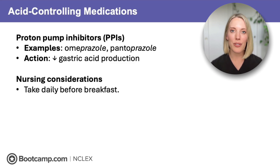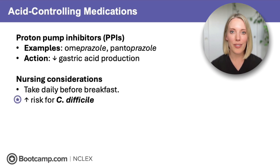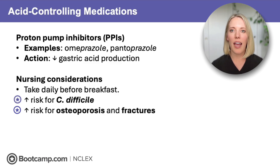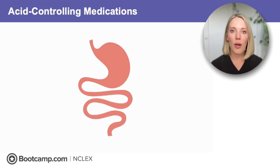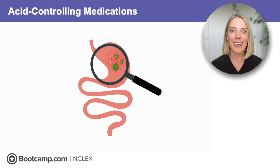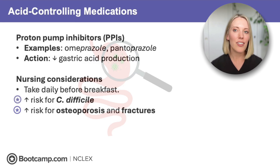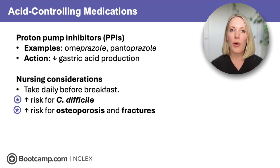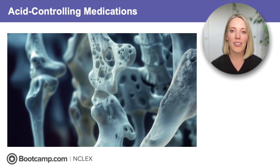PPIs are really great at reducing gastric acid, but altering gastric acid can have downstream effects — specifically, increased risk for C. diff and increased risk for osteoporosis and fractures. Gastric acid is part of our innate immune system; it protects us from harmful bacteria because bacteria can't survive in that acidic environment. If we chronically suppress gastric acid, we increase our risk for GI infections like C. diff. Additionally, gastric acid is important for calcium absorption, so chronic suppression can lead to difficulty absorbing calcium, increasing risk for osteoporosis and fractures.